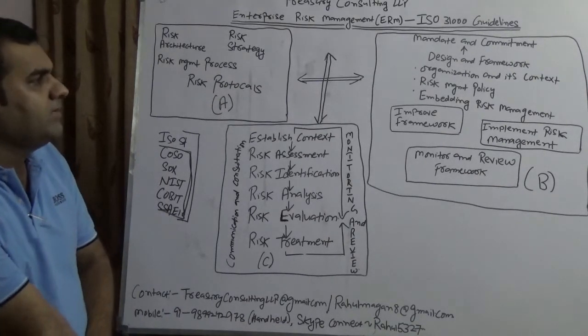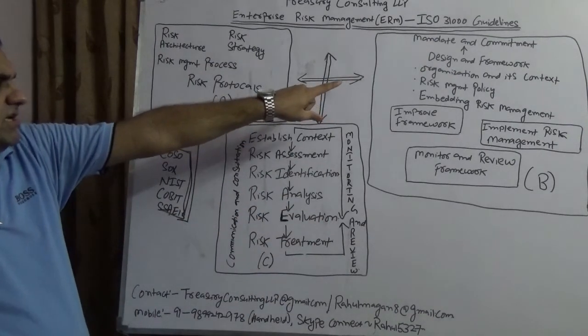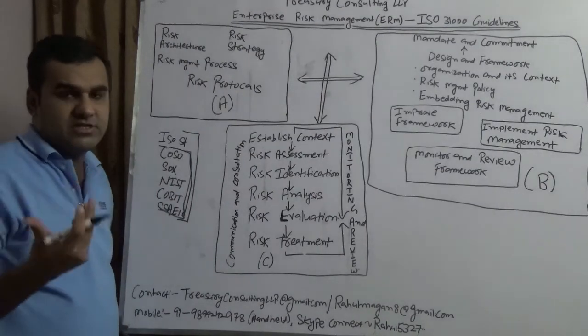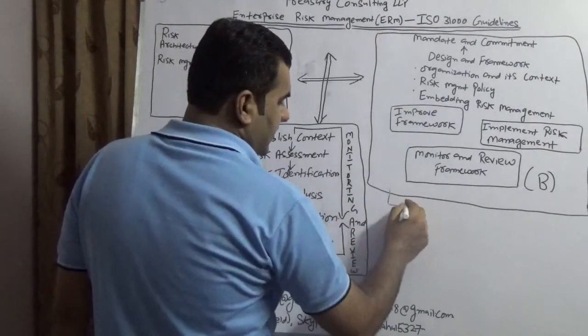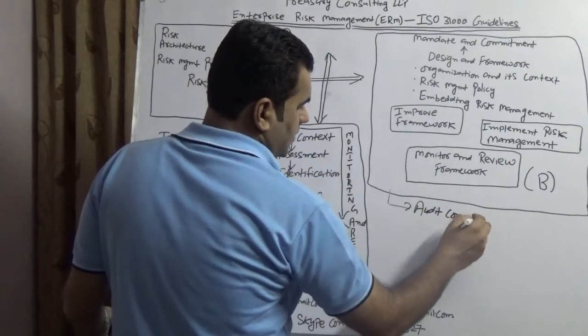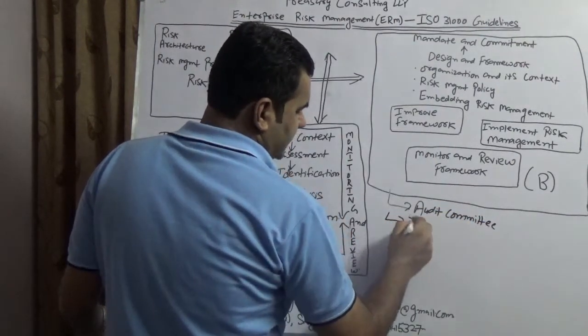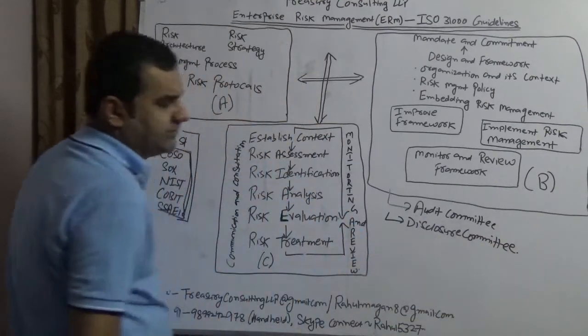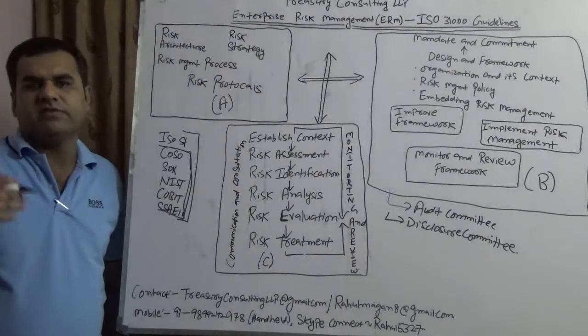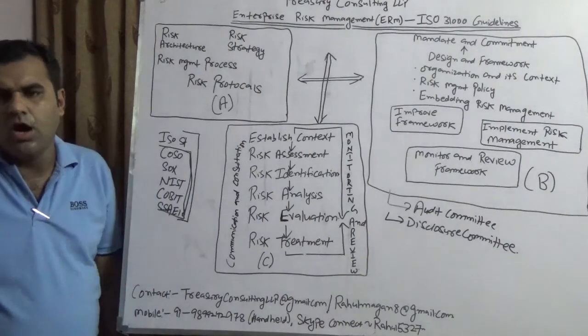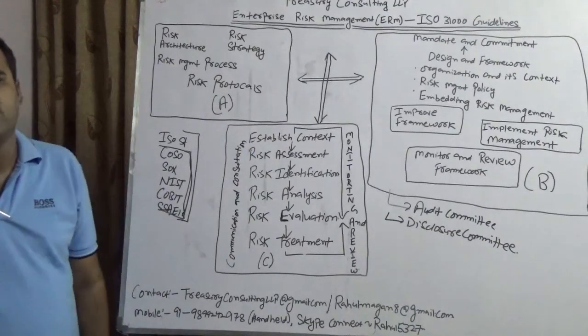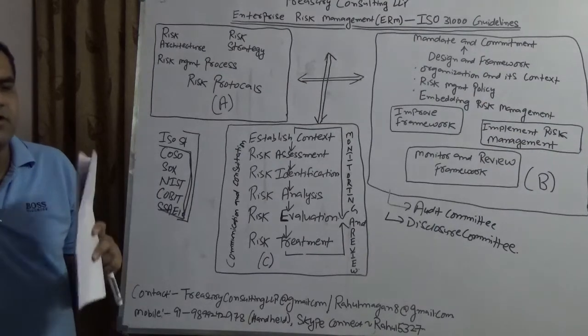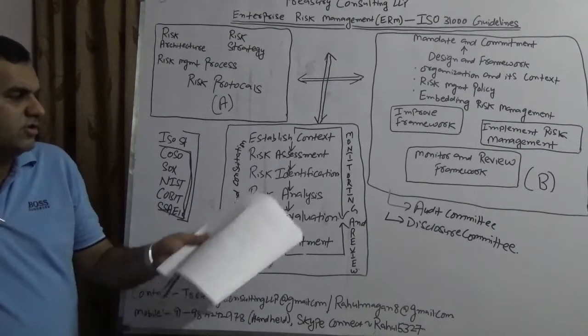In this you have architecture A, which is risk architecture, risk strategy, risk management process, and risk protocols. Then very important, we will go to big B. B means mandate and commitment, design framework, organization and its context, risk management policy, embedding, and everything like that. There are two important committees which take care of that in every company. One is audit committee and one is disclosure committee. Disclosure committee talks about what we certainly need to disclose in a company, how we are going to disclose, what are the variety of ways we are going to disclose.